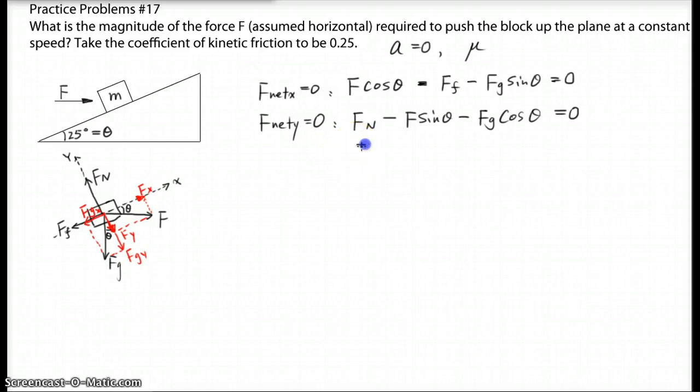Now we still have another relation, Ff which equals mu times Fn. If we plug in everything, although I won't plug in numbers, we should get this. For the first equation, we got F cos theta minus the Ff which is mu times Fn. If you look at the Fn, if you solve the Fn from the second equation, it's actually equals F sine theta plus Fg cos theta, equals 0.